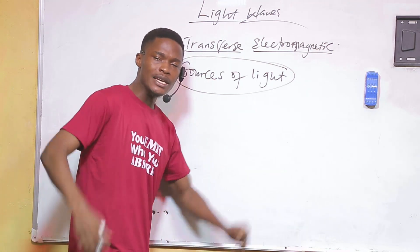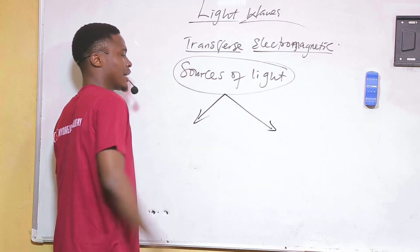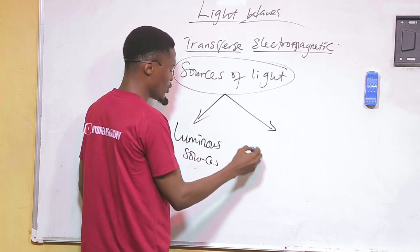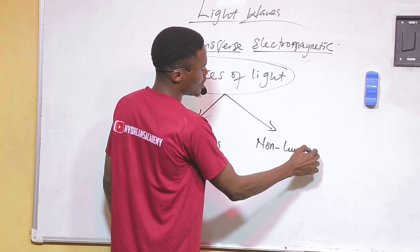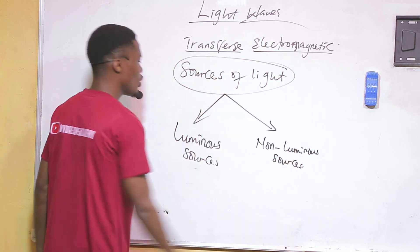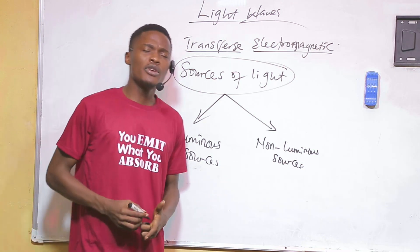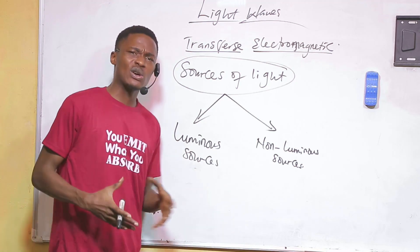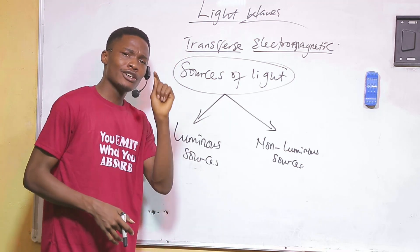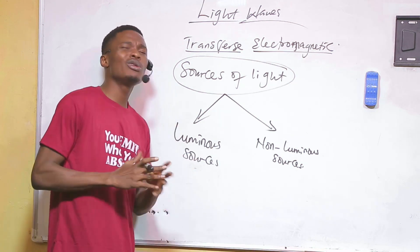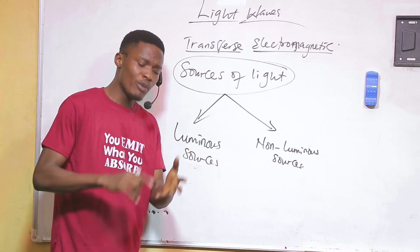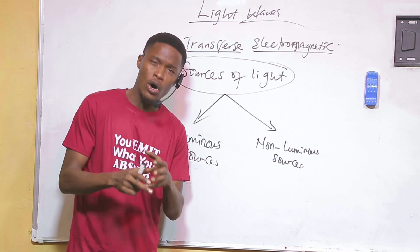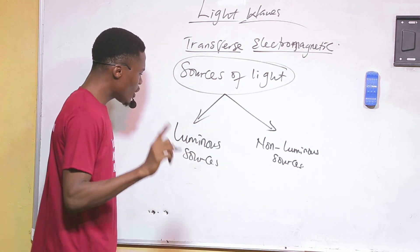Sources of light can be broadly classified into two classes: luminous sources and non-luminous sources. Luminous sources are sources of light that produce their own light. Students often think luminous sources are only natural sources, but that is not true — luminous sources can be both natural and artificial. The key thing is that a luminous source must produce its own light.